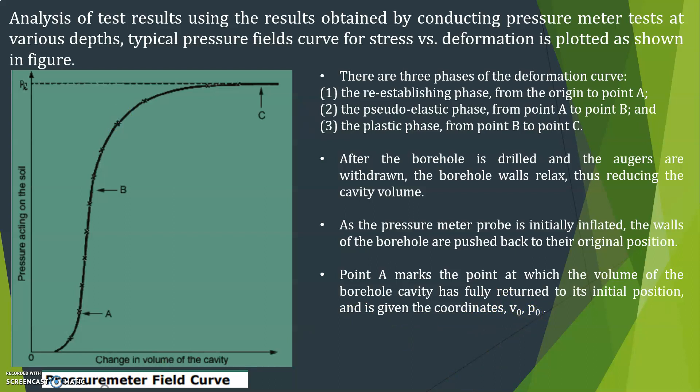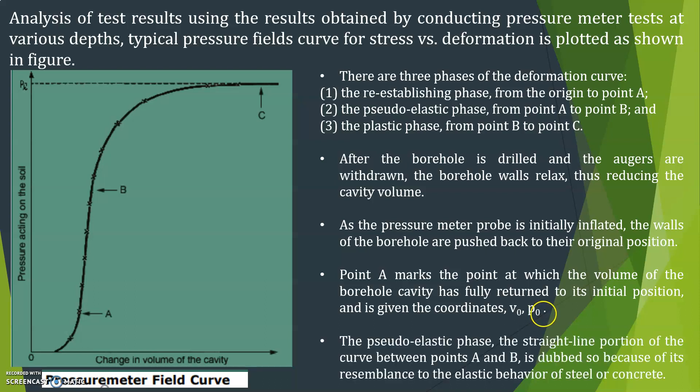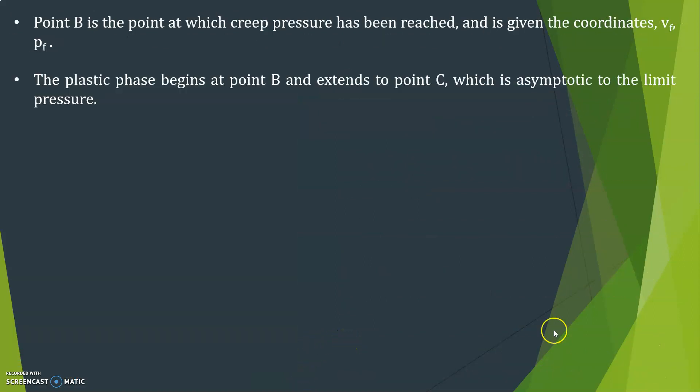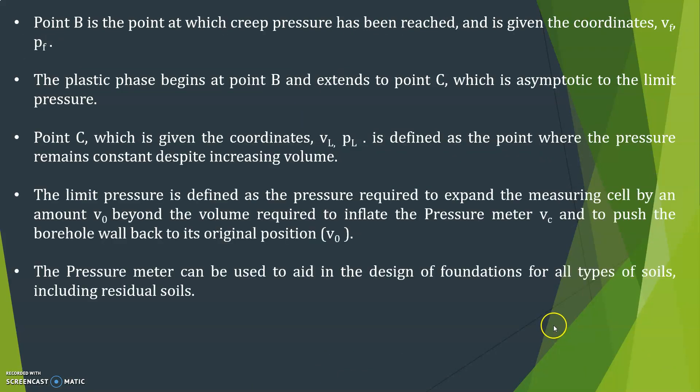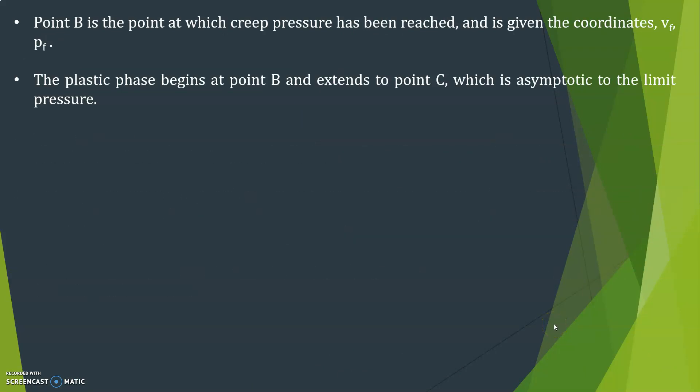This is the point where the volume of the borehole cavity has fully returned to its initial position. The pseudo-elastic phase, the straight line portion of the curve between the point A and B is double-dubbed because of its resemblance to the elastic behavior of steel or concrete. The point B is the point at which creep pressure has been reached and is given the coordinates Vf, Pf.